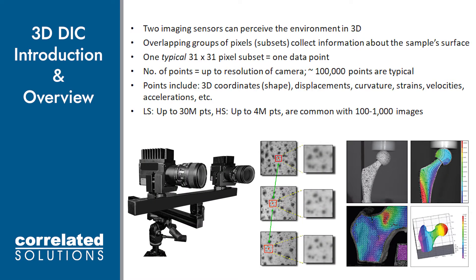The way DIC works is that we have two cameras that have an overlapping field of view, synchronously capturing images of a speckle pattern. We can think of the speckle pattern being broken up into a bunch of pixels. If we look at a small group of pixels, which are called subsets, we can think of each subset as having a single data point. If each subset overlaps other surrounding subsets, this is what allows us to get full field data that is typically associated with the DIC method.